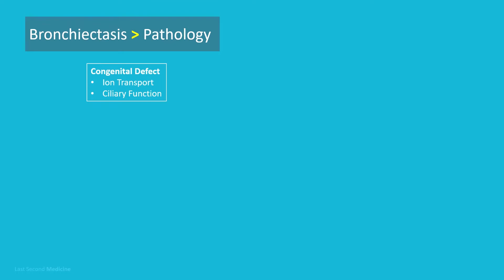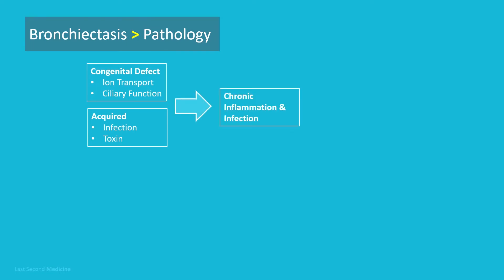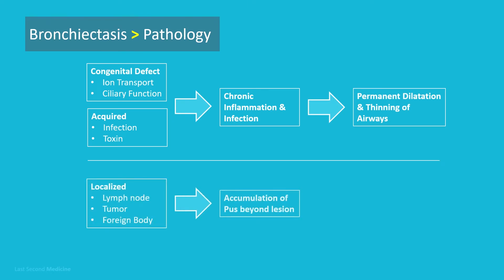Bronchiectasis may result from a congenital defect affecting airway and transport, such as cystic fibrosis, or ciliary function, such as immotile cilia syndrome or Kartagener syndrome. Alternatively, it may be an acquired condition secondary to damage to the airways by destructive infection, inhaled toxin, or foreign body. Localized bronchiectasis may occur due to accumulation of pus beyond an obstructing bronchial lesion, such as enlarged tuberculosis hilar lymph nodes, a bronchial tumor, or an inhaled foreign body.